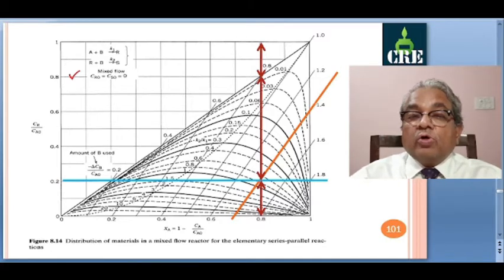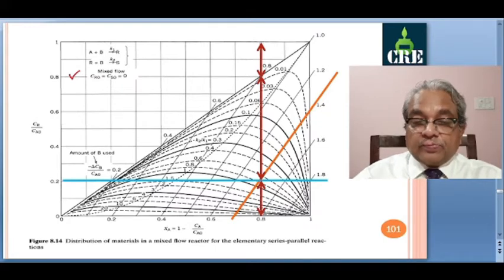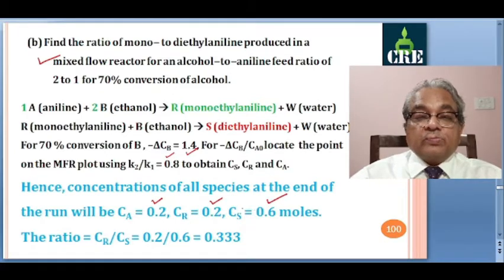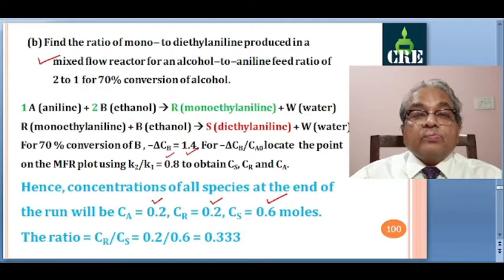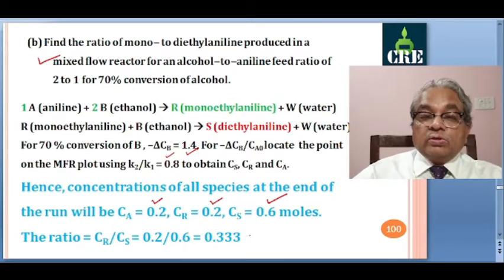This point has been found on the MFR chart. From the plot, CA equals 0.2, CR equals 0.6, and CS equals 0.2. What is asked is the ratio of mono to diethylaniline, so mono is R and di is S, giving CR by CS. CR is 0.6 and CS is 0.2, so the ratio is 3 to 1, that is 0.333.